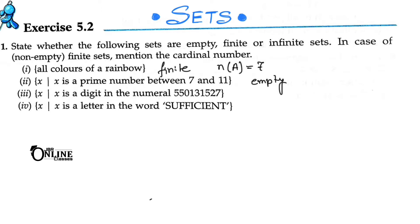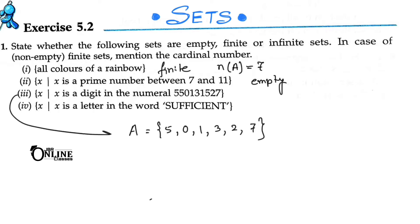Third one: x is a digit in the numeral 5501315274. It is a finite set. The digits are 5, 0, 1, 3, 2, and 7. Remember, in a set no number is repeated, so the set is {5, 0, 1, 3, 2, 7}. The cardinal number n(A) equals six.